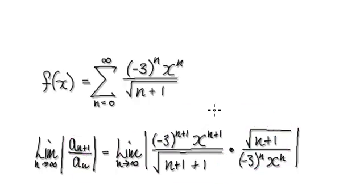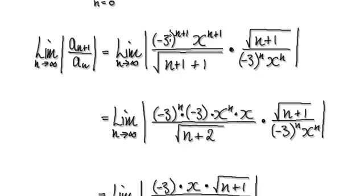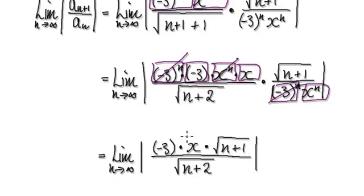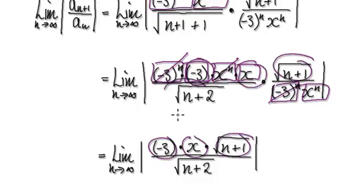So now tidy this thing up. Visualize this as being negative 3 to the power of n times negative 3. And then visualize this as one block multiplying another block. And then this will cancel out with this block here. And then this x to the power of n will cancel out with this, and so on.